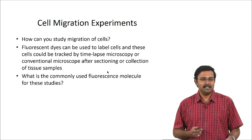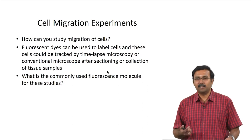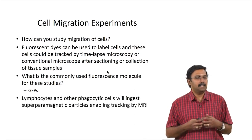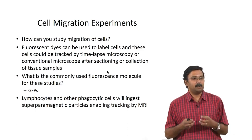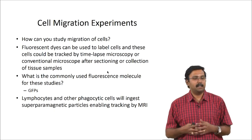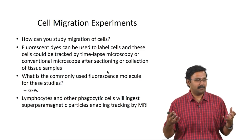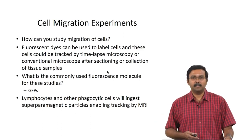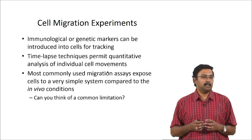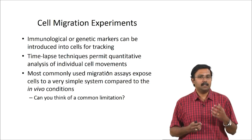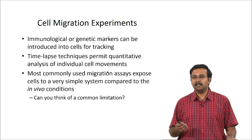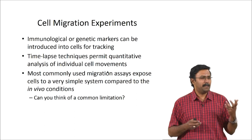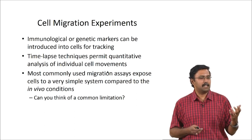Fluorescein diacetate is used to stain live cells, but the most common molecule used is GFP. Lymphocytes and other phagocytic cells can also be tracked using MRI because they ingest superparamagnetic particles — since these are phagocytic cells, they gobble up the nanoparticles and you can track them using MRI or other microscopy techniques. When talking about cell migration experiments, you introduce genetic markers to cells that can be tracked. Time-lapse techniques permit quantitative analysis of individual cell movements.